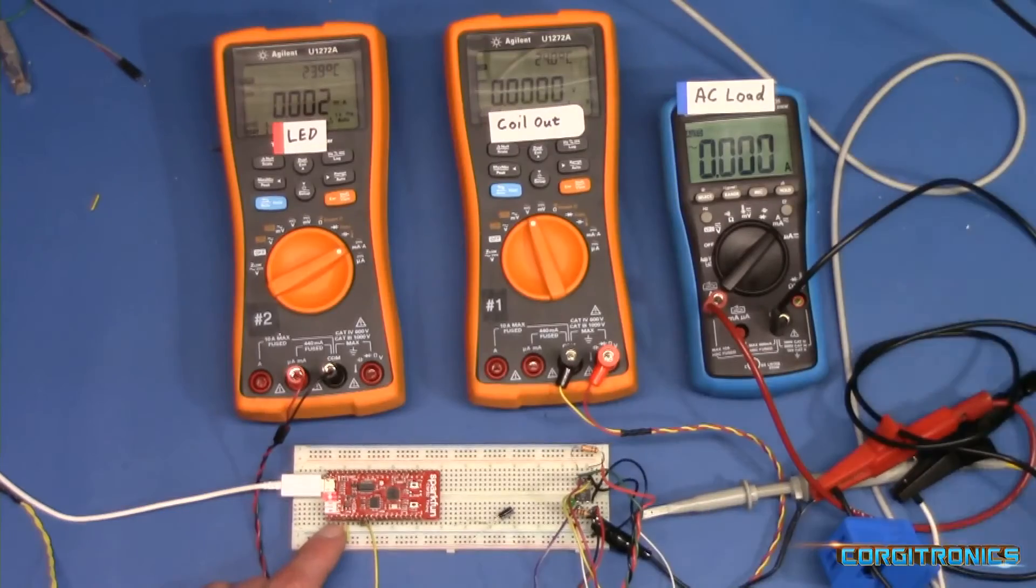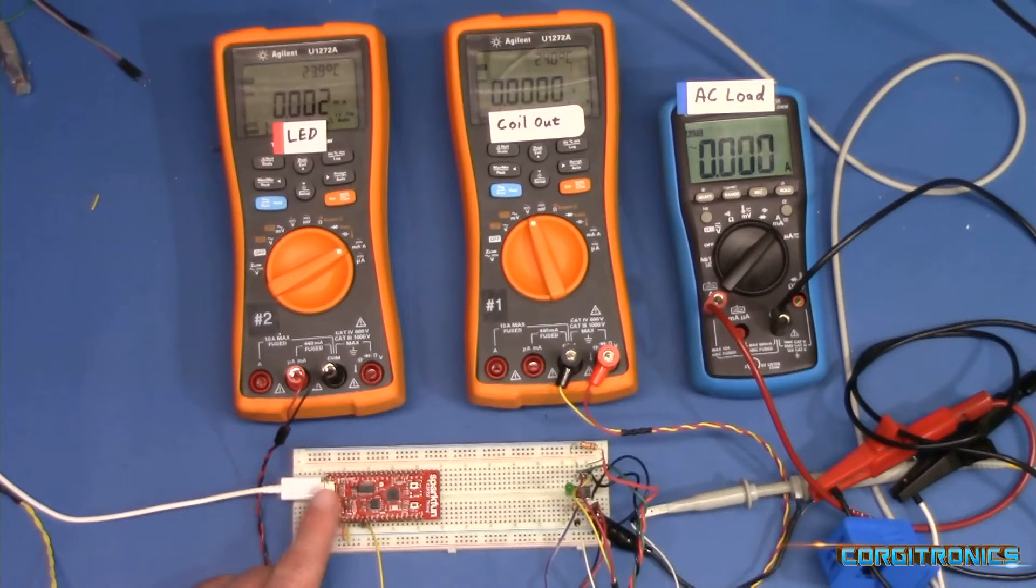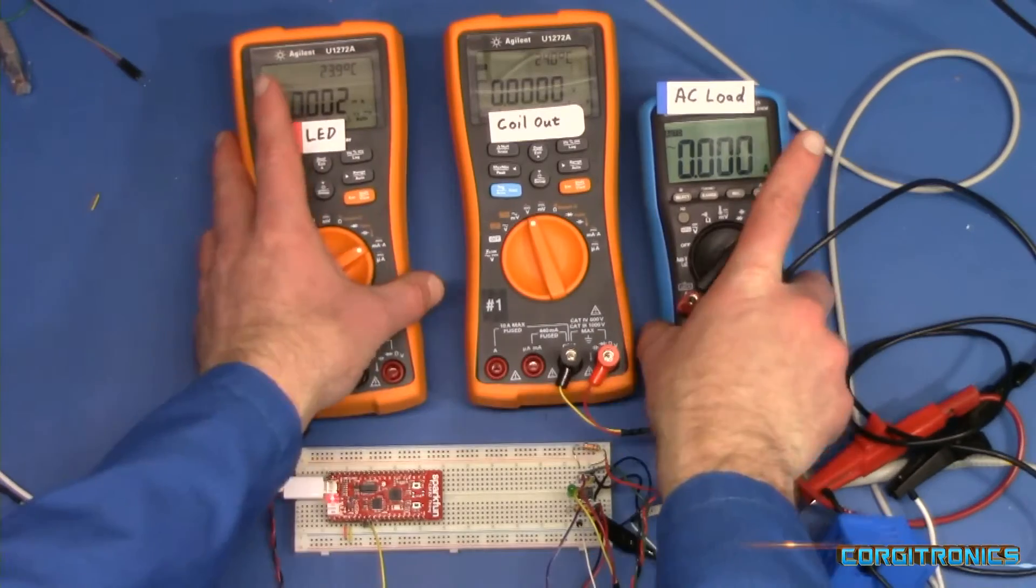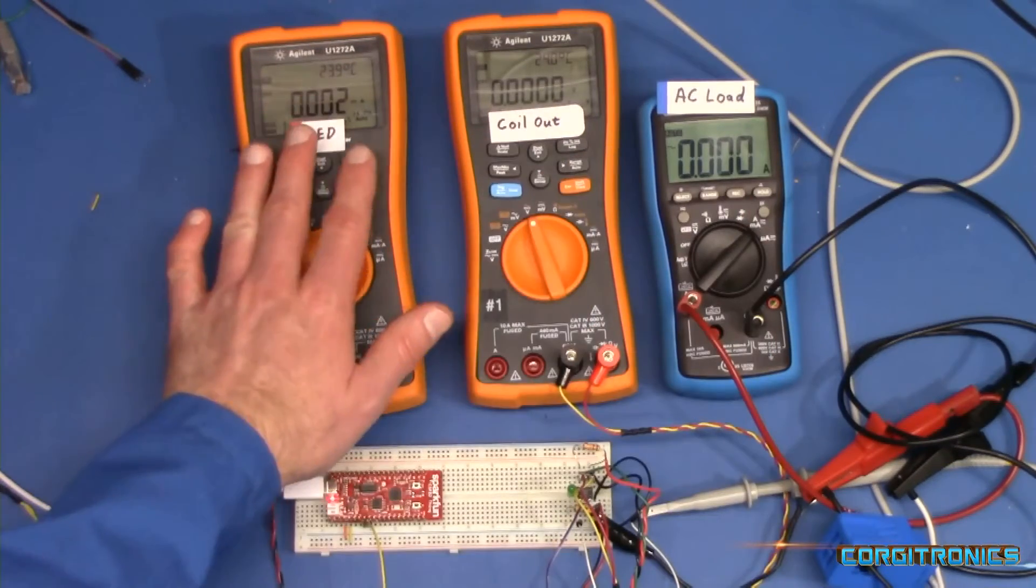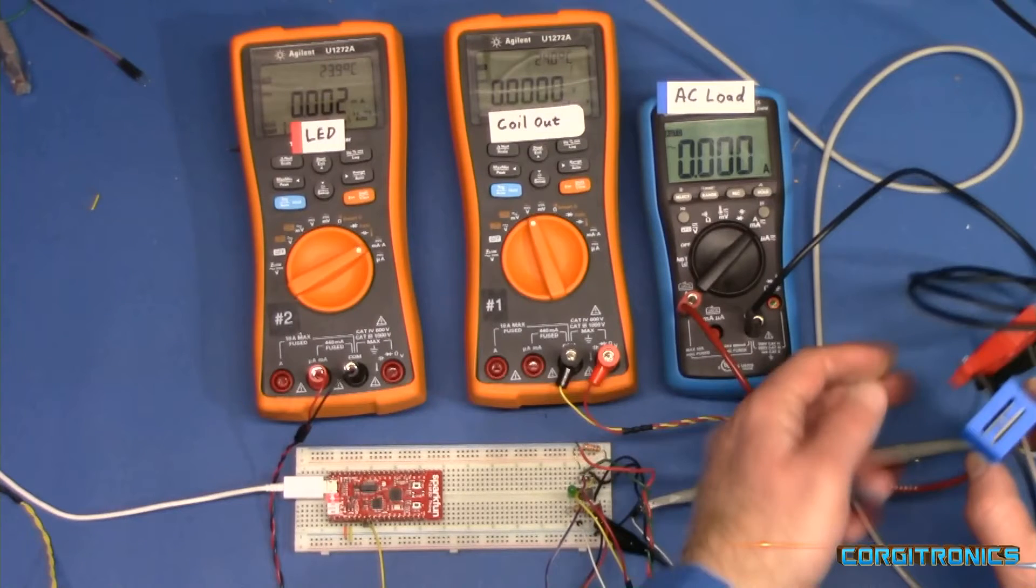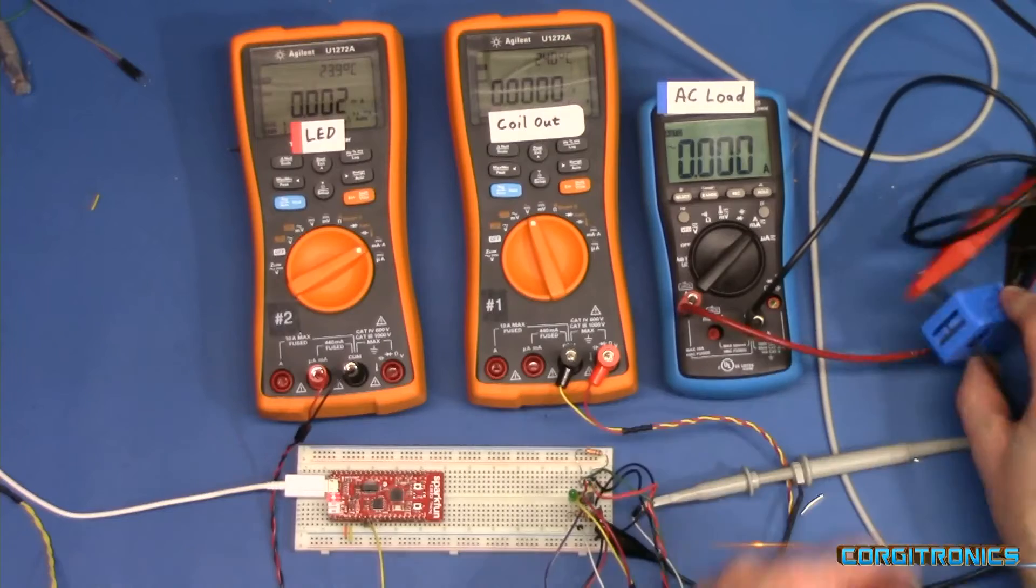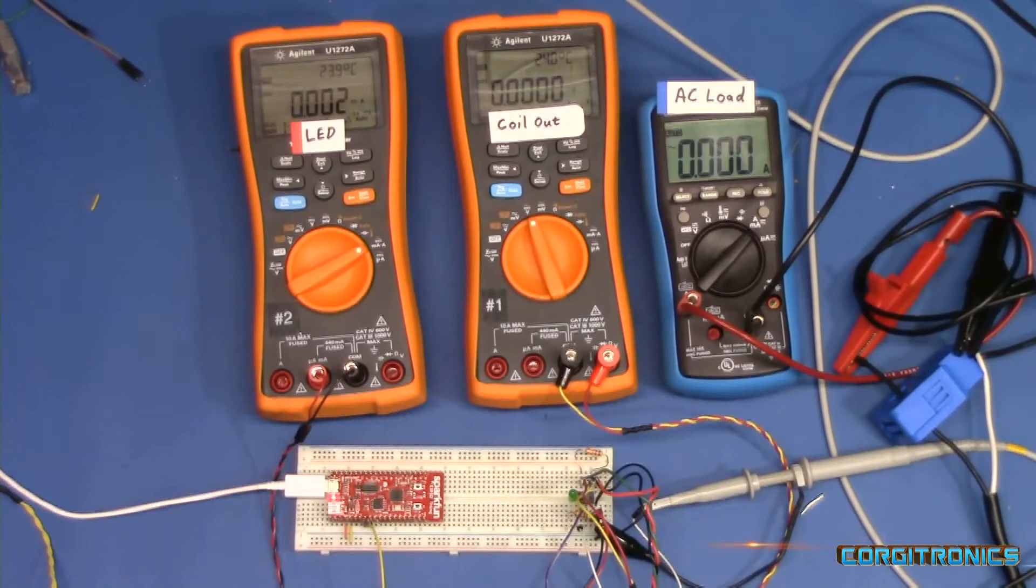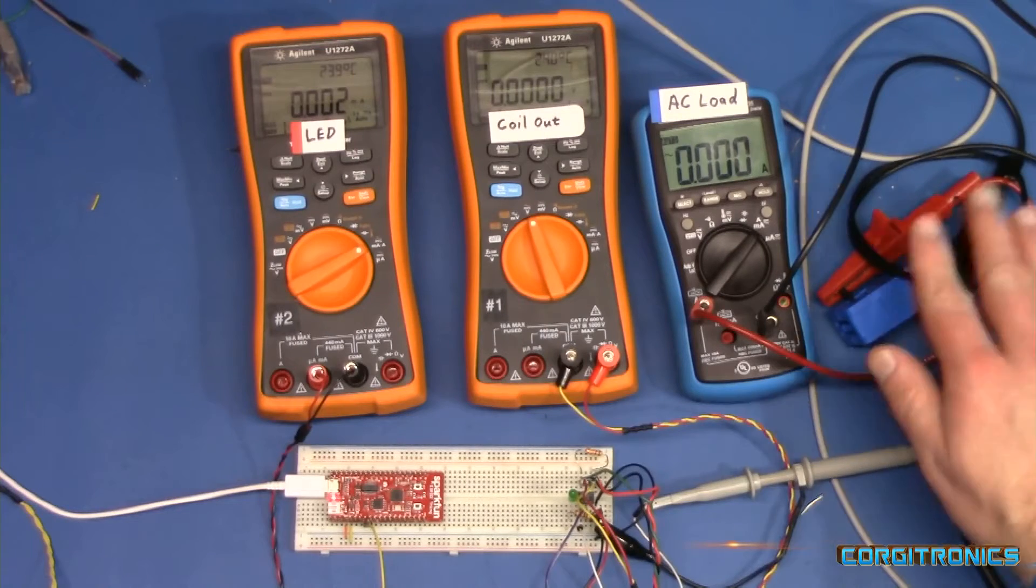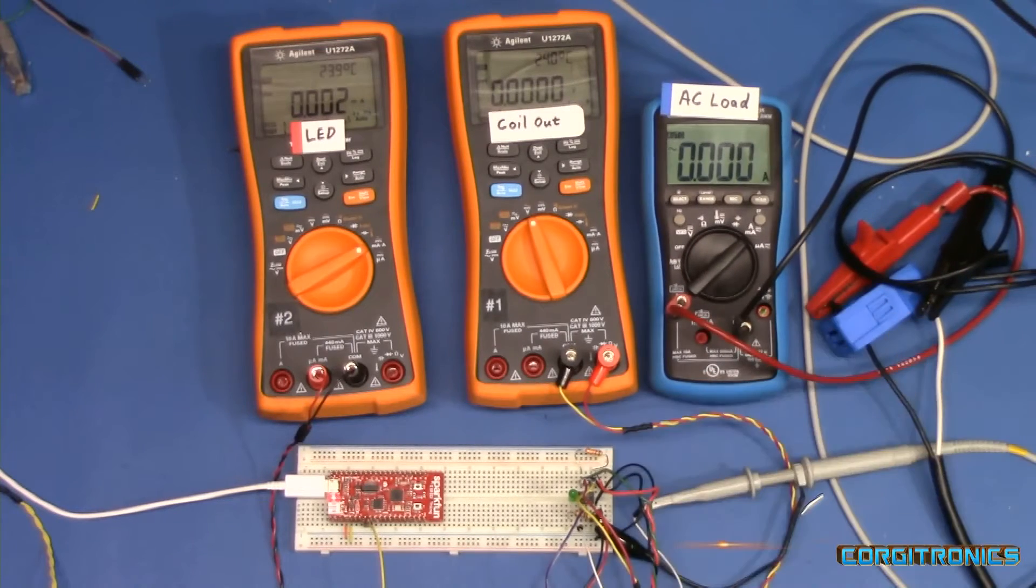Then we'll also take the output of this rectifier and the LED and run it over to our microcontroller and get that to turn on its little LED when it gets an appropriate signal level. All right, so we've got the coil output monitor, the LED current monitor, and our power. Now we're going to have live AC out on the bench when I plug that into the socket, so I want to move that out of the way. You shouldn't be working like this unless you really know what you're doing. You've got to be very careful.